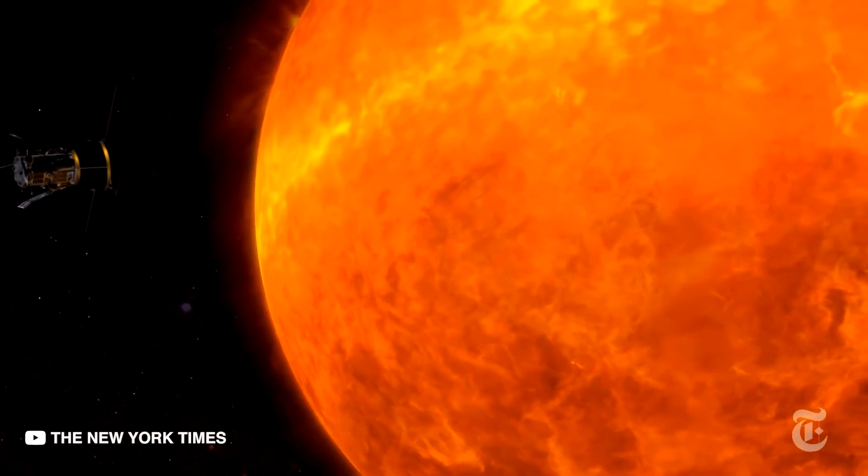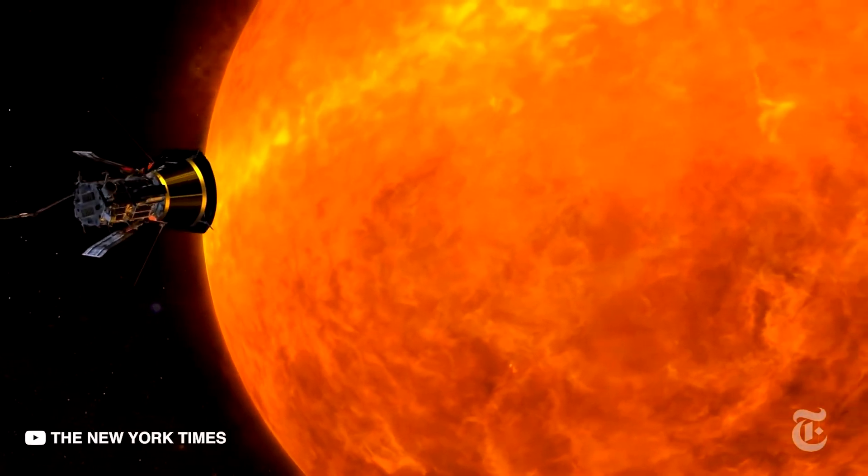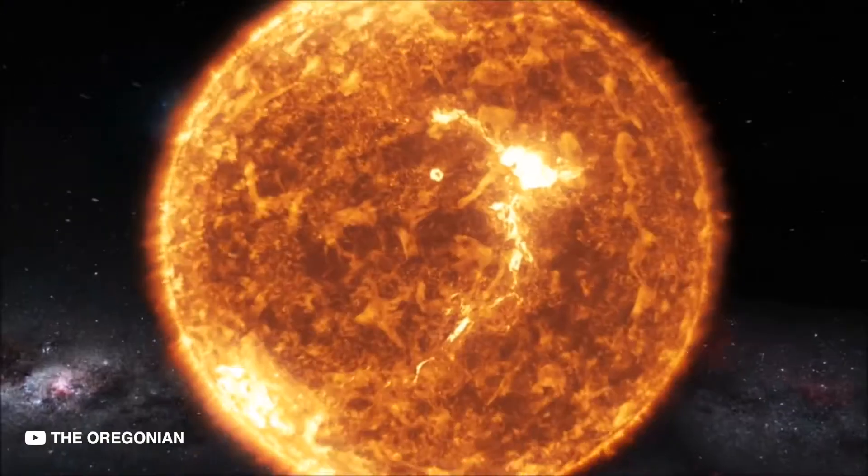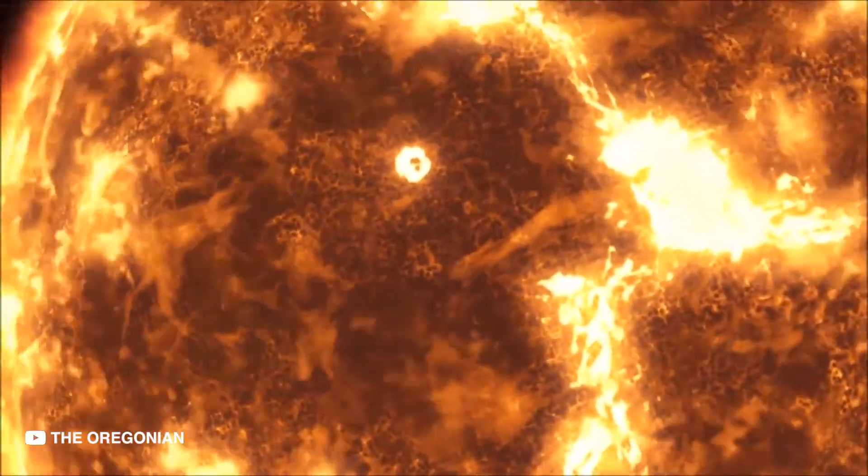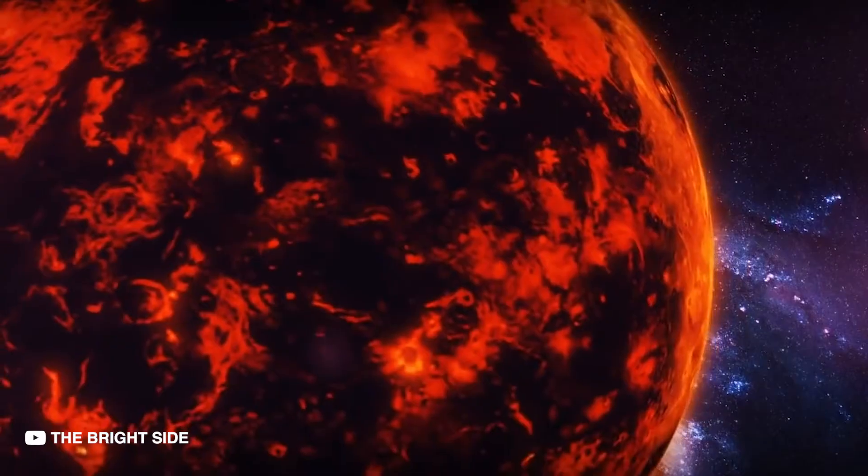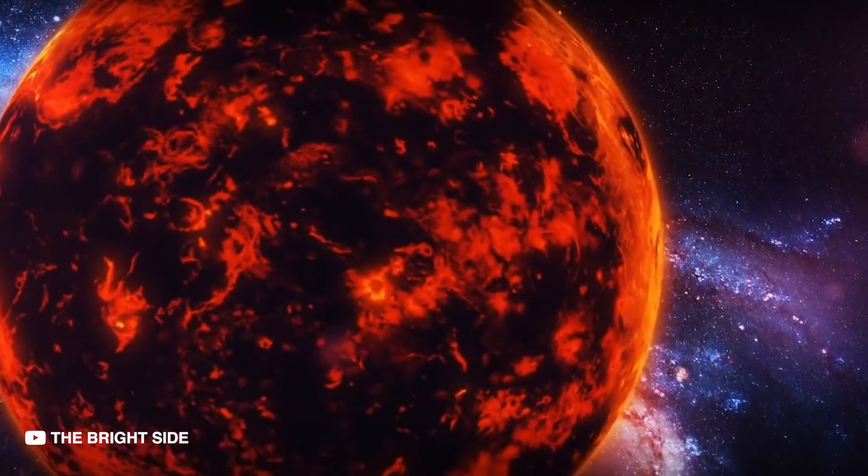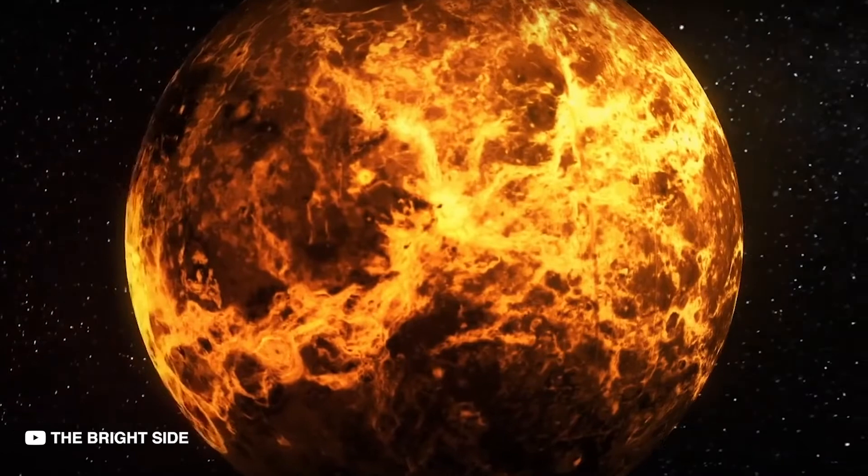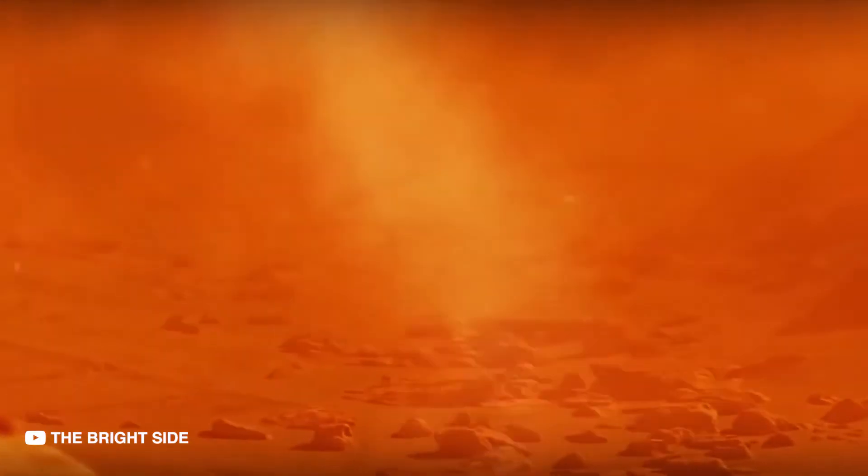Our Sun is still quite young, relatively speaking, and its future is bright, perhaps too bright. The Sun is slowly expanding and brightening, and over the next few billion years it will eventually desiccate Earth, leaving it hot, brown and uninhabitable.